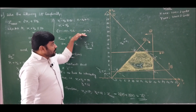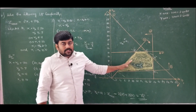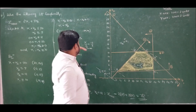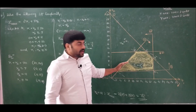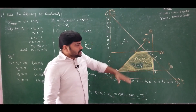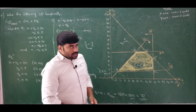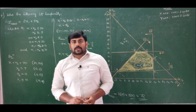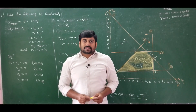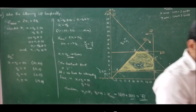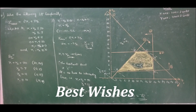So this is how you should solve whenever the RHS of a constraint is 0: construct the line, inspect whether it satisfies the constraint properly, indicate the correct direction, and find the feasible region. The solution for problem number 11 is x1 = 18, x2 = 12, and z max = 72 units. That's all from this lecture. Thank you.